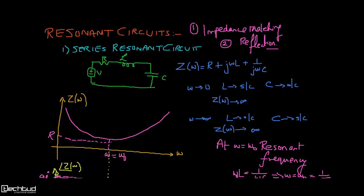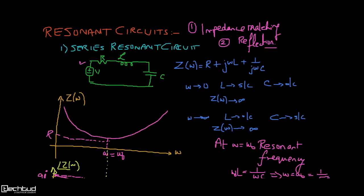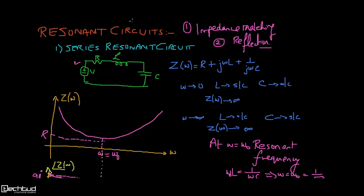Resonant circuits broadly can have any combination of R, L, and C. Generally we go with two RLC combinations: one being RLC in series and the second being RLC in parallel. First we will go with series resonant circuits and later cover parallel resonant circuits. For the series circuit with RLC components, the impedance is Z(ω) = R + jωL + 1/(jωC).